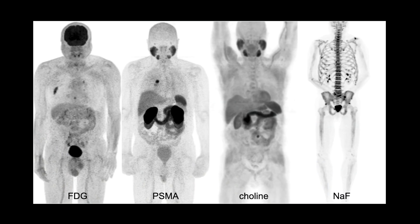There are a lot of radiotracers used to image and stage patients with prostate cancer and it can sometimes be confusing. FDG, fluorodeoxyglucose, is a sugar analog sometimes called a sugar PET, which can be used particularly in patients with later stage disease. It can be prognostic but it's not very helpful in localizing small volume disease. Sodium fluoride can be used to visualize osseous metastatic disease, and choline as well as fluciclovine, an amino acid analog, are also used frequently in prostate cancer. But the newer generation of agents is PSMA, which we will talk about here.